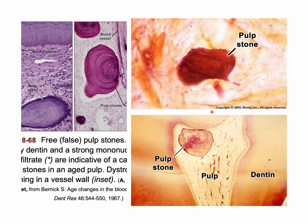According to their shape, calcifications could be true or false denticles. If they are false denticles, they either have cells inside of them, or they are laminated and concentric like bone — they have circular lamellar structures inside of them. These are false denticles because they look like bone more than they look like dentine.